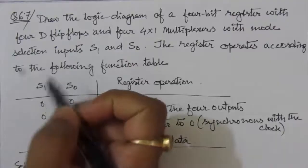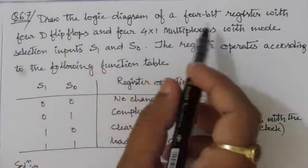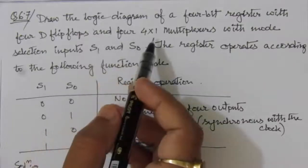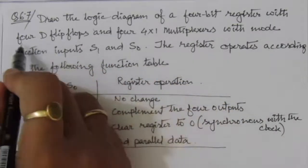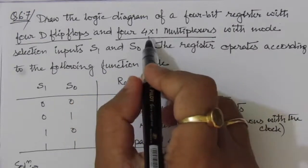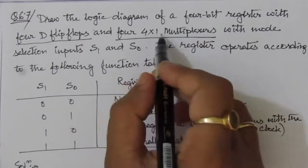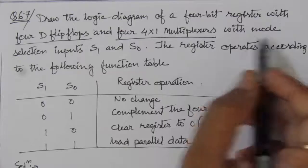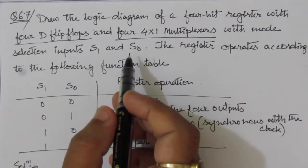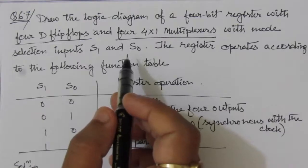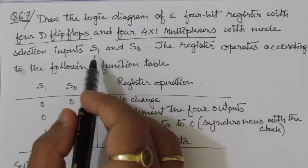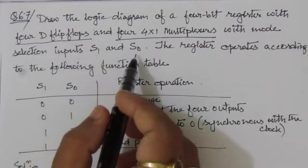The problem is: draw the logic diagram of a 4-bit register with 4 D flip-flops and 4 four-by-one multiplexers. We have to use 4 D flip-flops and 4 four-by-one multiplexers — that is, 4-input 1-output multiplexers with mode selection lines S1 and S0. A 4x1 multiplexer has 4 inputs and 2 selection lines, S1 and S0.